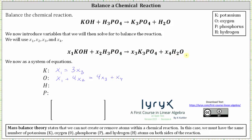Now let's look at hydrogen. We have one atom of hydrogen here, three atoms of hydrogen here, and on the right we have two atoms of hydrogen. This means one times x sub one plus three times x sub two must equal two times x sub four, or x sub one plus three x sub two equals two x sub four.